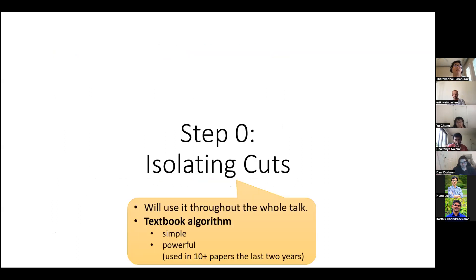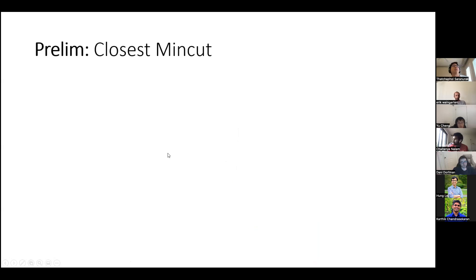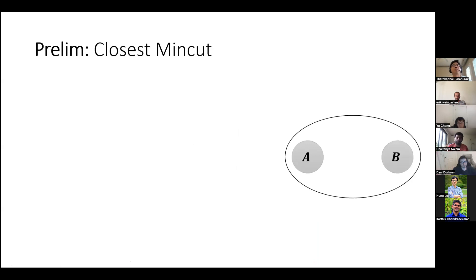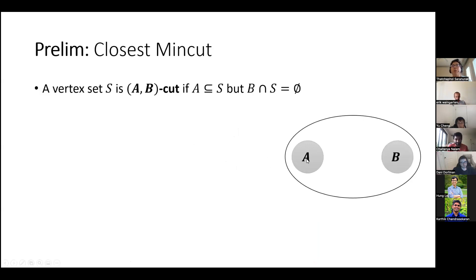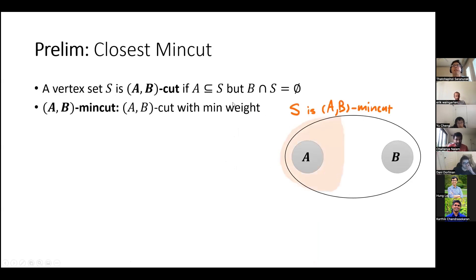Let's start with the main tool: isolating cuts. This is a textbook-level algorithm — simple yet very powerful — and has been a main driving force in this line of research over the last two years. First, a definition: given two vertex sets A and B, a vertex set S is an A-B cut if A is on one side and B is completely on the other. An A-B min cut is the minimum weight A-B cut. The closest A-B min cut S is the one closest to A: for any other A-B min cut S', we have S ⊆ S'. This closest min cut is unique and can be computed in one max flow call plus linear time.